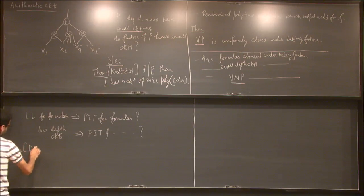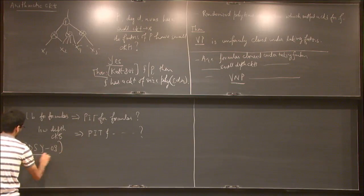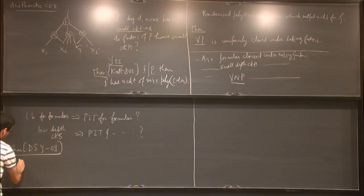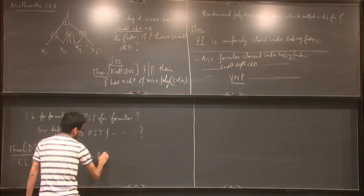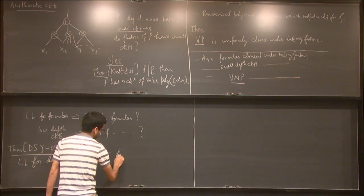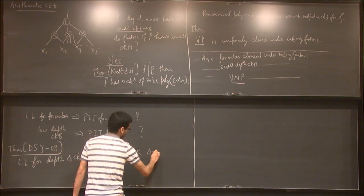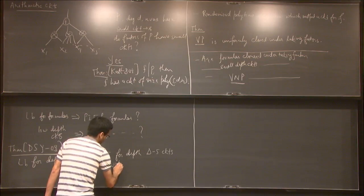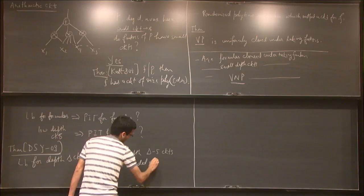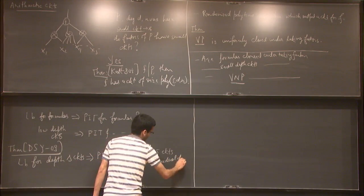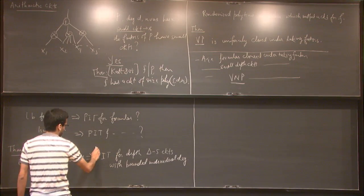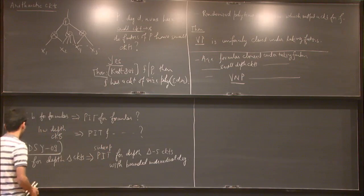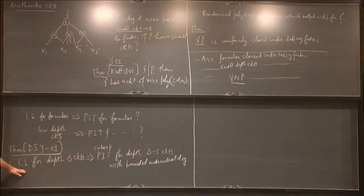This problem was studied in a paper by Dvir, Shpilka, and Yehudayoff. They showed that a lower bound for depth-delta circuits implies PIT for depth delta-minus-5 circuits with bounded individual degree. When I say PIT, the running time is sub-exponential, but as your lower bound gets better, your running time improves. If the lower bound is truly exponential, you get a quasi-poly improvement.